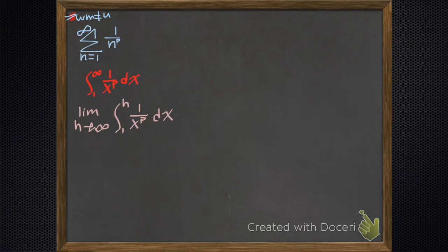It's improper, so we change the limit of integration to a variable that we like. It looks like we chose h. So it's the limit as h goes to infinity of the integral from 1 to h of 1 over x to the p dx.